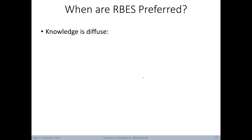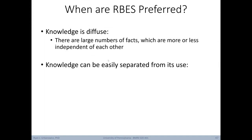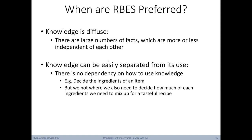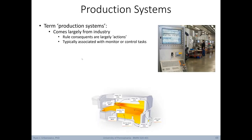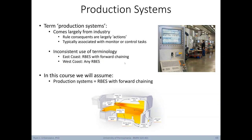Rule-based expert systems are preferred when knowledge is diffuse — a large number of more or less independent facts — and when knowledge can easily be separated from its use. The term production systems comes largely from industry, where consequences of rules are usually actions, associated with monitoring or controlling tasks. In this course, we'll assume production systems refer to rule-based expert systems that utilize forward chaining. Production rules format if-then expressions with the antecedent on the left and the consequent on the right — for example: if light is red, then stop.